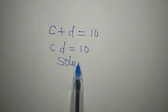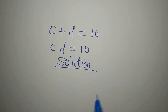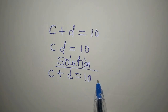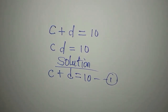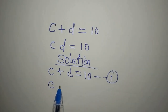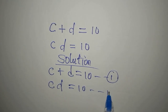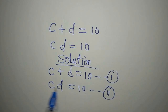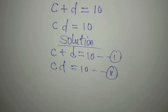Let's provide a solution to this problem. We have c plus d equals 10 — this is equation 1. We also have c times d equals 10 — this becomes equation 2. Note that c·d here means c times d, while the first one is c plus d.